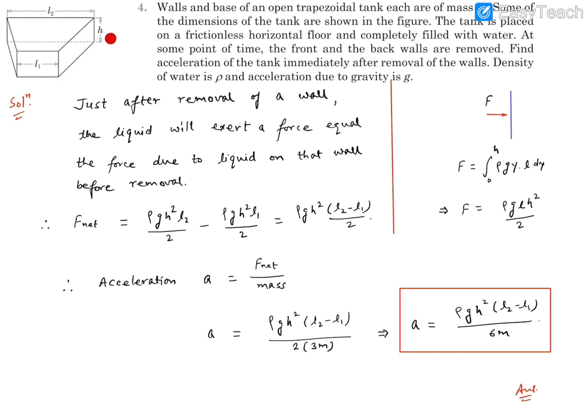And same thing is going to be true for this back wall. And initially the force that is acting on this front wall and the back wall, they are in opposite direction. So once both the walls are opened, then the force imbalance is going to be equal to the difference of the pressure acting on these walls. This is the point we are going to use.